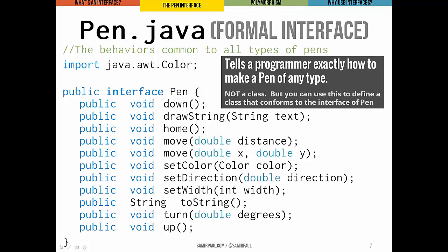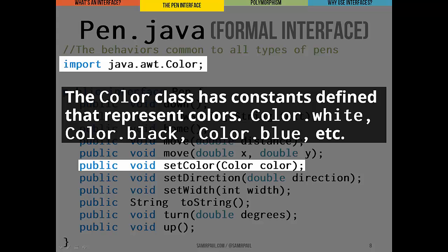This isn't a class — I want to make that really clear. This is an interface. But when you define a class, we have a way to specify that that class must conform to this interface. If it is a type of pen, it has to have a down method, a drawString method, a home method, and so on. One note: the Color class, which we import from the java.awt package, is the way we represent colors in Java. We have a method called setColor that takes a Color object, and the Color class has a bunch of constants like Color.white and Color.black for commonly used colors.